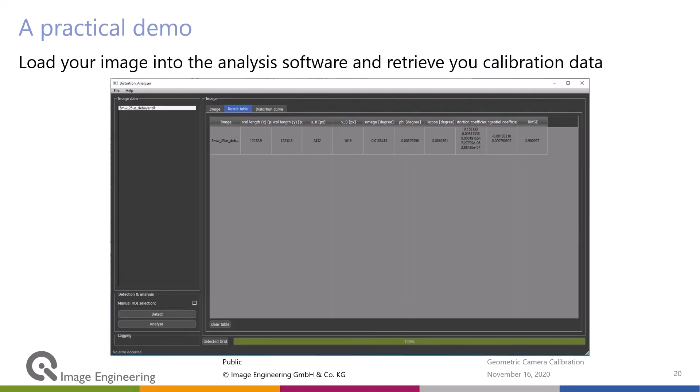The only thing you have to do in addition is you load your image into the software. Then you press the analysis button and out come all the values that I already mentioned: principal point, the angles, the distortion coefficients.